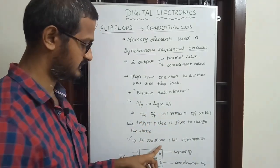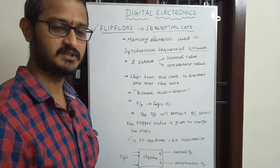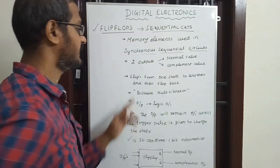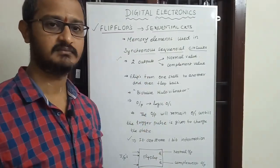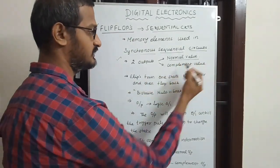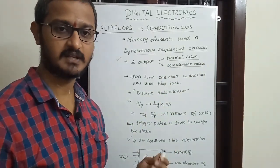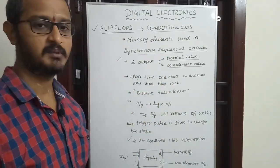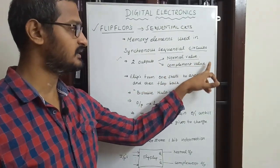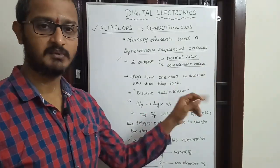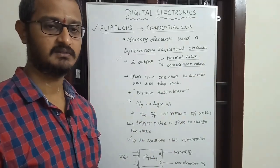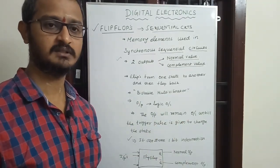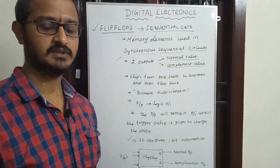A flip-flop can store one bit of information, which is either 0 or 1. If you look at the outputs, there are two outputs: one is the normal value output Q, and one is the complement value output Q-bar. If the normal value is 0, the complement value is 1, and vice versa. Q is the normal output and Q-bar is the complementary output.